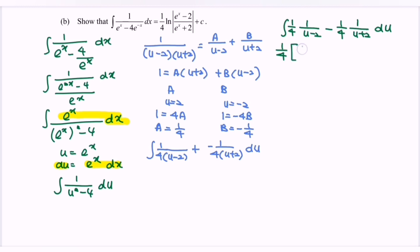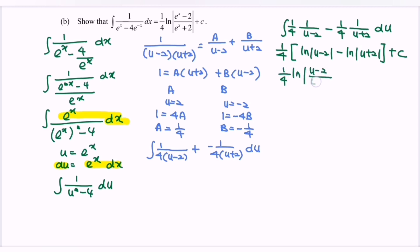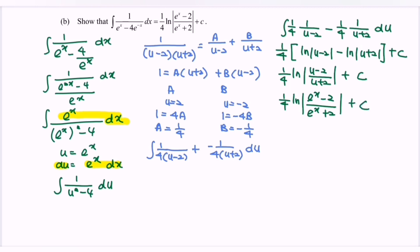Integrating the situation, we have (1/4)[ln|u minus 2| minus ln|u plus 2|]. Substituting back u equals e^x, we get (1/4)·ln|(e^x minus 2)/(e^x plus 2)| plus C, which matches what we needed to show.